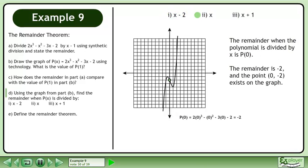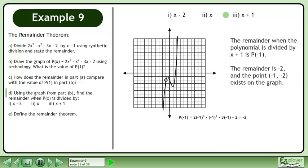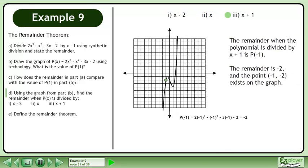The remainder when the polynomial is divided by x is p at 0. The remainder is the y-intercept value, and the point exists on the graph. The remainder when the polynomial is divided by x plus 1 is p at negative 1. The remainder is that value, and the point exists on the graph.